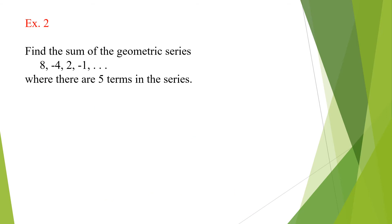Let's start example number 2. Find the sum of the geometric series 8, negative 4, 2, negative 1, where there are 5 terms in the series. For this series, a is equal to 8. Checking the common ratio: negative 4 divided by 8 equals negative one-half. Likewise, 2 divided by negative 4 equals negative one-half. And negative 1 divided by 2 equals negative one-half. So r is equal to negative one-half.